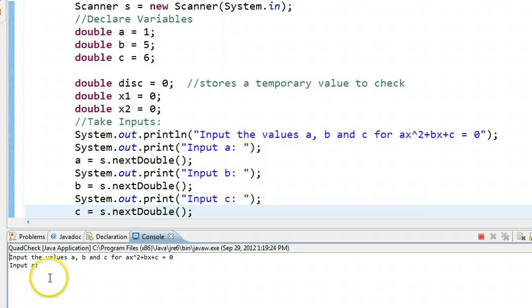Let's run it again. Negative 5, 4, 7. There are my two real roots.